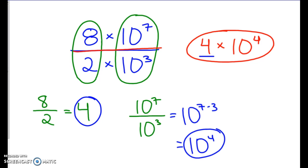Let's go on to another problem. Maybe a little bit of a harder one. Let's do 7.1 times 10 to the 6th power divided by 8.2 times 10 to the 1st power. So again, we are going to split up these problems.